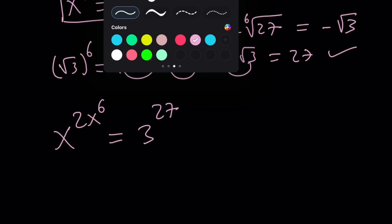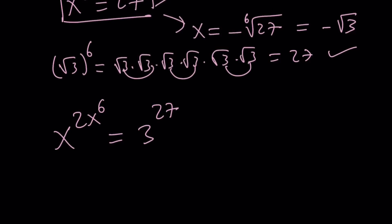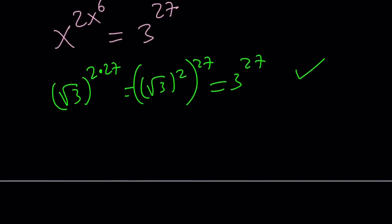If you replace x with square root of 3, you're going to get square root of 3 to the power 2 times square root of 3 to the 6th power. And if you remember, that was 27. You can basically write this as square root of 3 squared to the power 27. And that is 3 to the power 27. So, square root of 3 works. How about negative square root of 3?